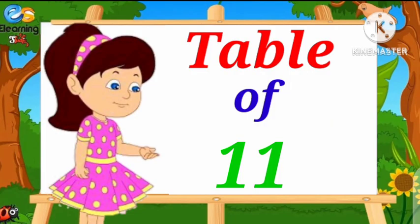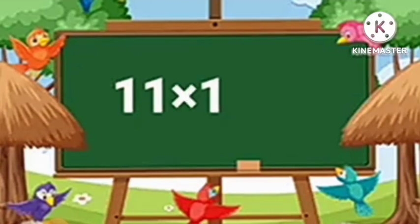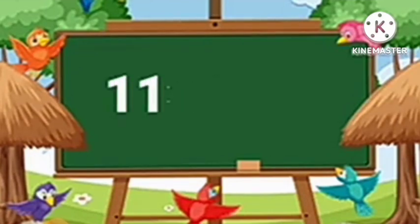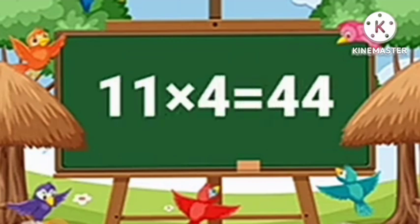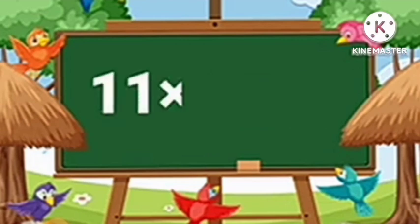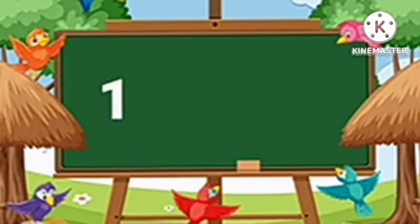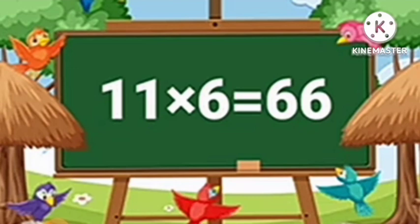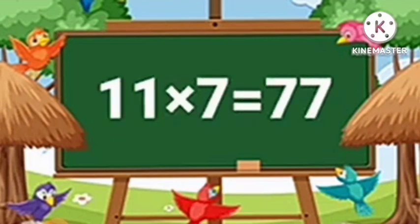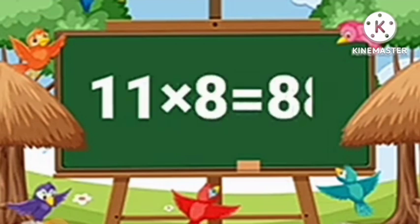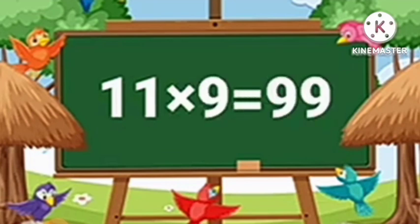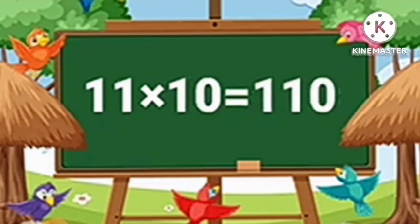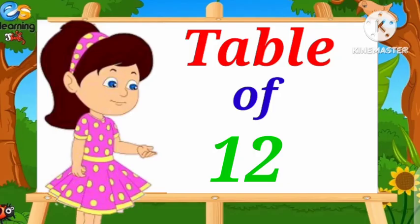Table of Eleven. Eleven-One's are Eleven. Eleven-Two's are Twenty-Two. Eleven-Three's are Thirty-Three. Eleven-Four's are Forty-Four. Eleven-Five's are Fifty-Five. Eleven-Six's are Sixty-Six. Eleven-Seven's are Seventy-Seven. Eleven-Eight's are Eighty-Eight. Eleven-Nine's are Ninety-Nine. Eleven-Ten's are One Hundred and Ten.